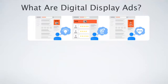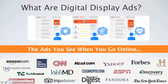So what are digital display ads? They're the ads that you see on all of the websites that you go to. You'll see them over in the corner, you see them at the top — that's what a digital display ad is. These ads, you see them on Amazon, the Weather Channel, CNN, all of these different sites.